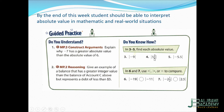Find each absolute value. The absolute value of negative 9 is 9 — whether the number is negative or positive, the absolute value will be positive. The absolute value of 5 and 3 over 4 is 5 and 3 over 4. The absolute value of negative 5.5 is 5.5.